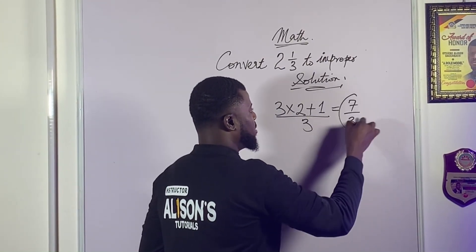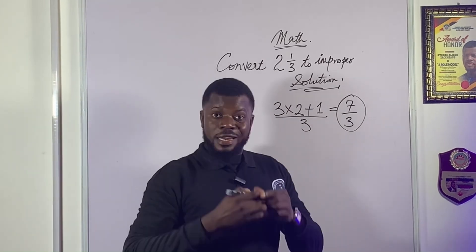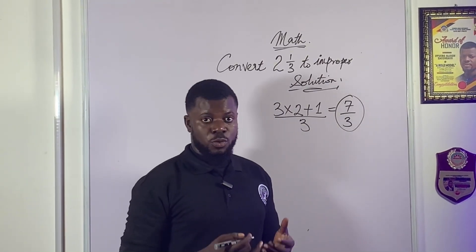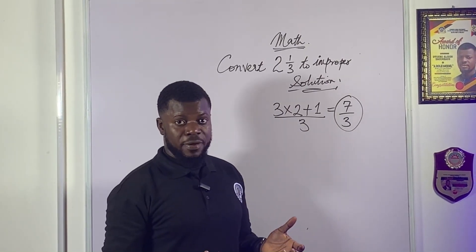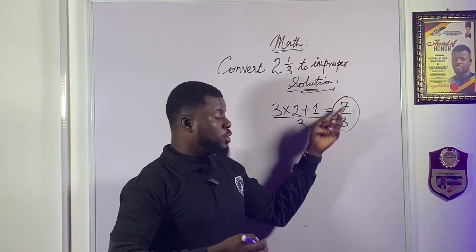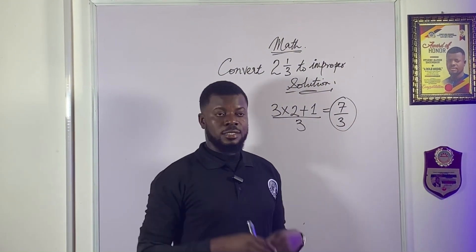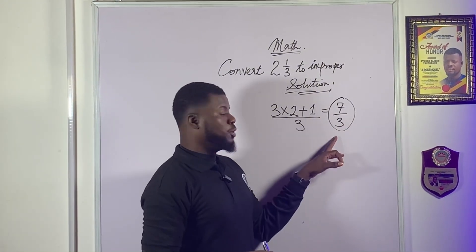And this is what we call an improper fraction. Why is it an improper fraction? Because the numerator is greater than the denominator.